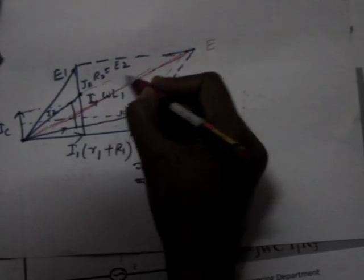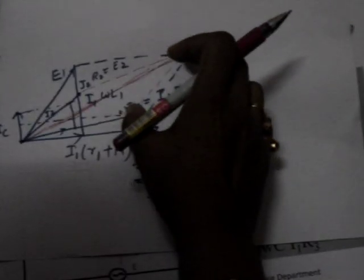This one is E4, this one is E2. So E2 plus E4 equals E. So this is the phasor diagram.